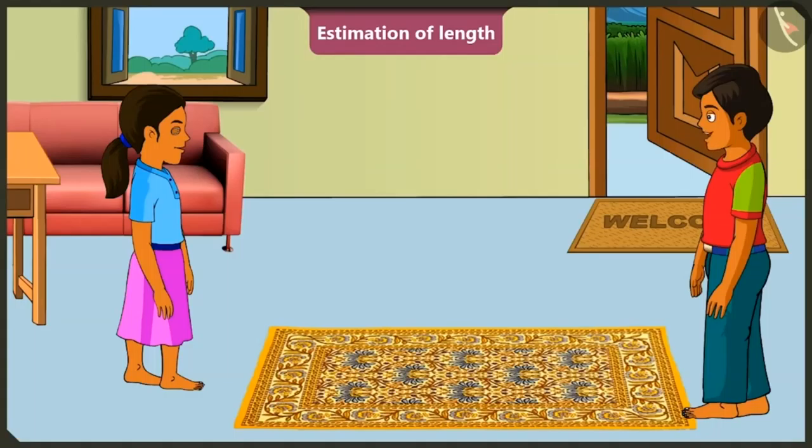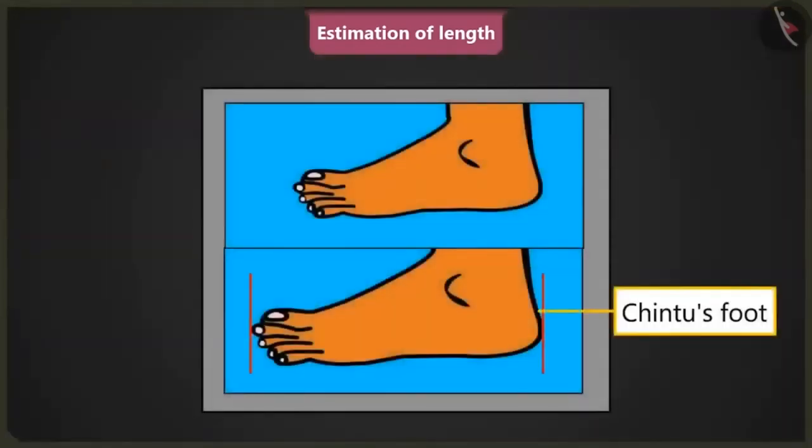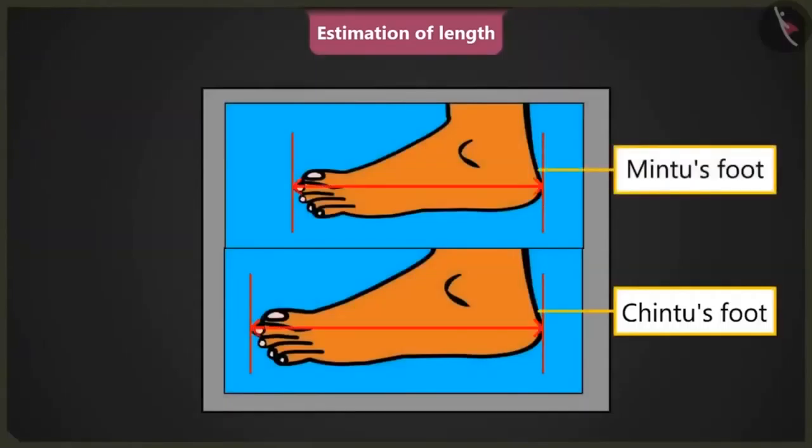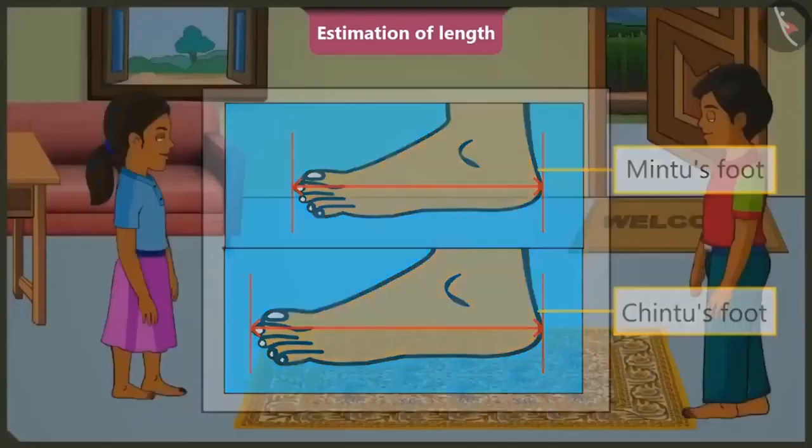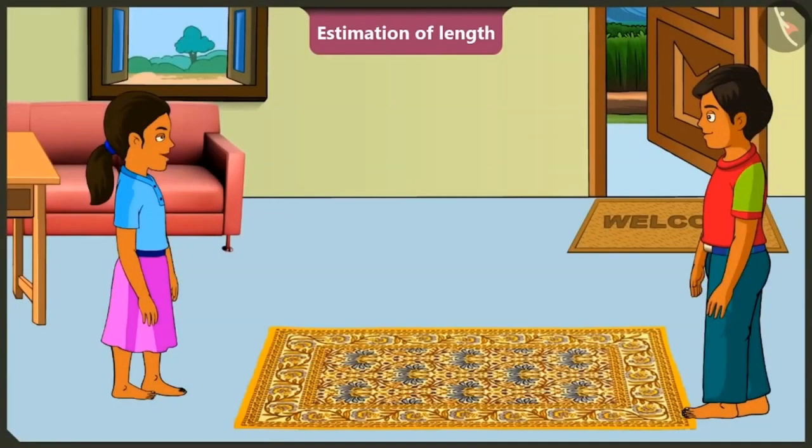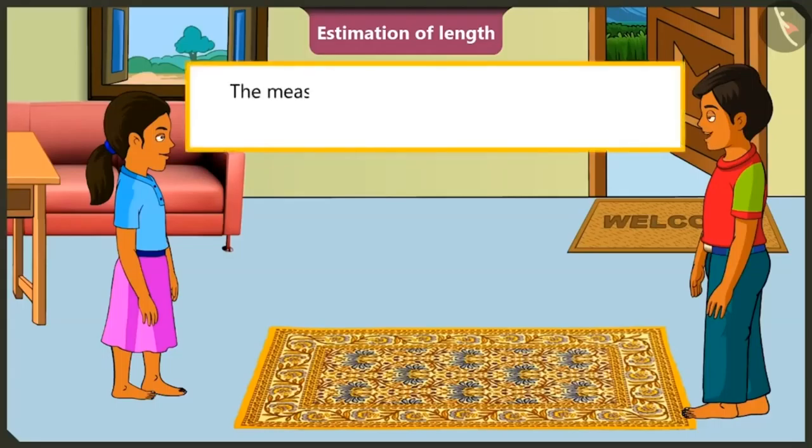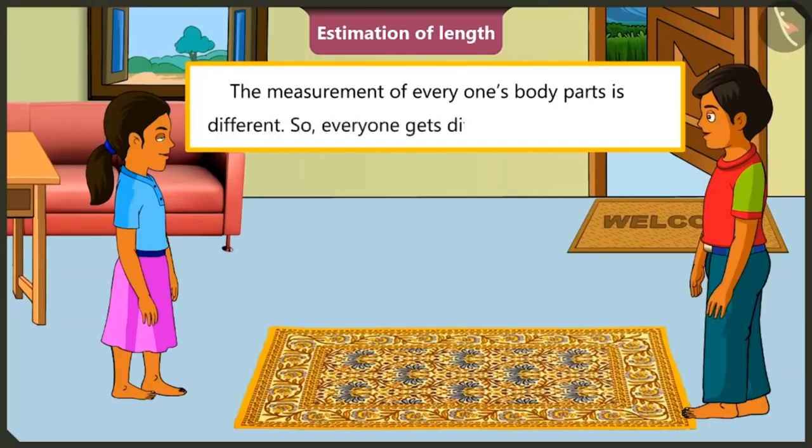Mintu, the carpet did not shrink. Look carefully. My feet are longer than yours and your feet are shorter than mine. Oh, that's how measurement of the same carpet came out differently. Yes, Mintu, because everyone's body parts vary in size. So, everybody gets different measurements.